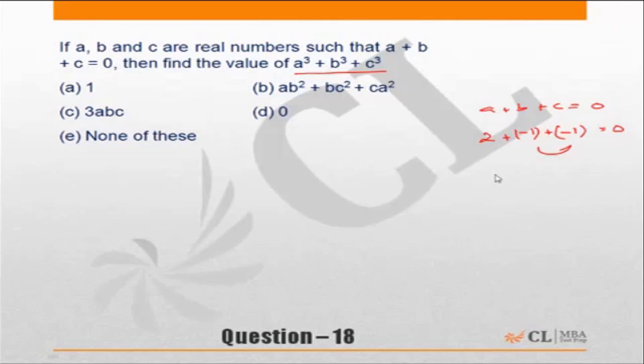Alternately, had the question said a, b, c have to be distinct, then I would have said a=3, b=-2, c=-1 and solve the question accordingly. Find the value of a³+b³+c³.